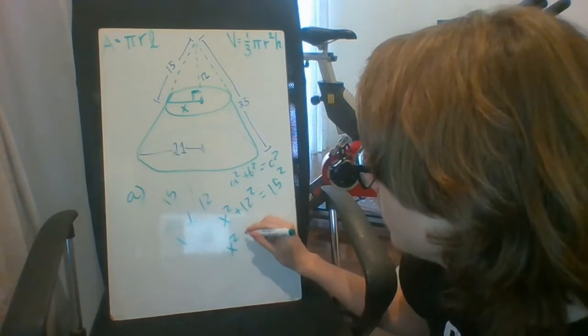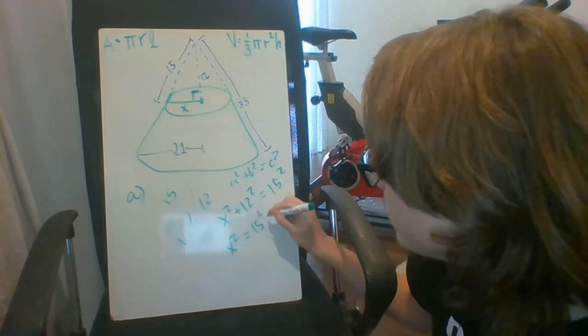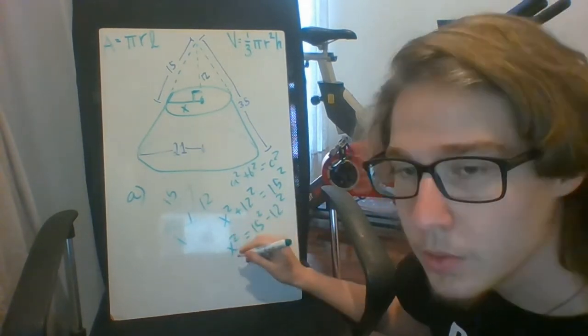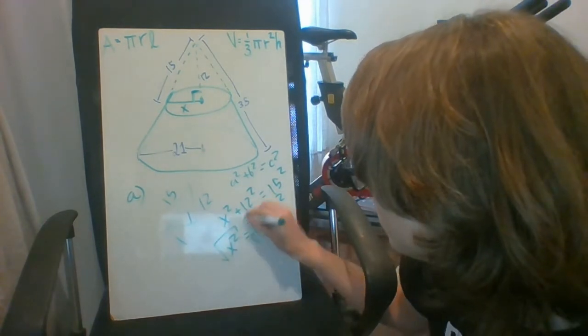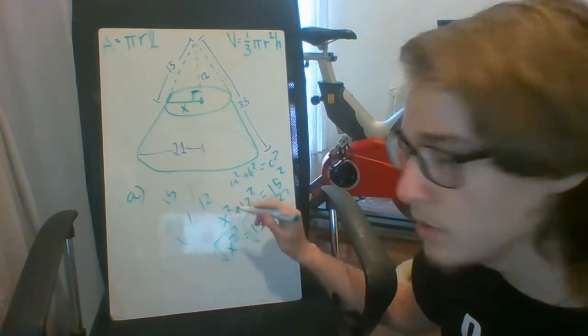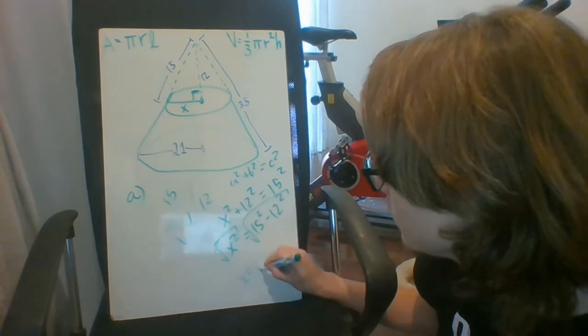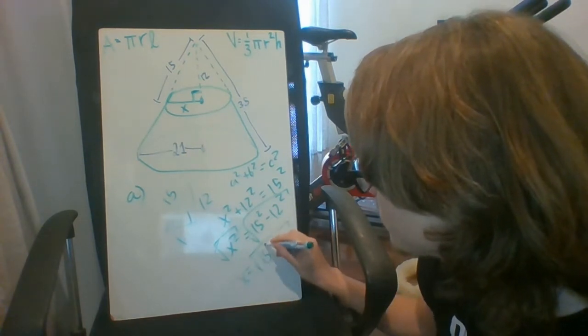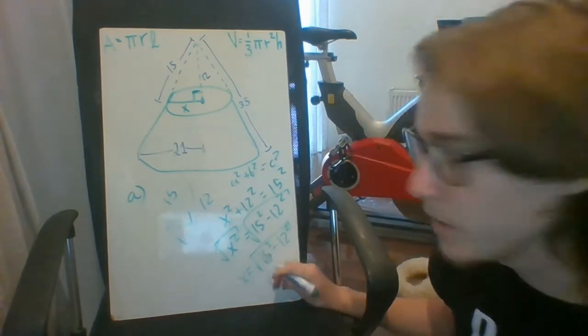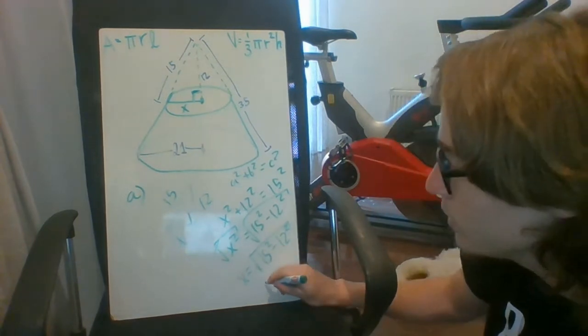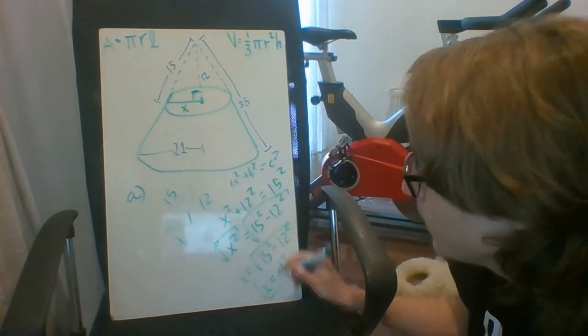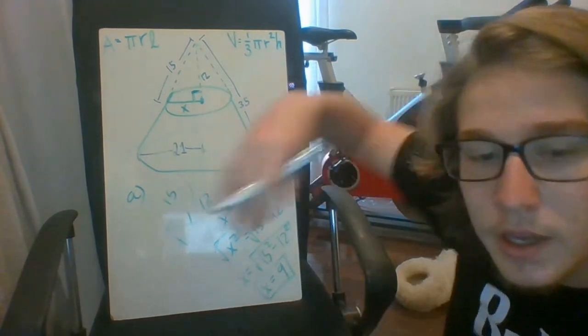Leaving x alone, 15 squared minus 12 squared. We do the square root on both sides, that gets rid of the exponent of 2. X equals the square root of 15 squared minus 12 squared. And if we put this in the calculator, we're gonna end up with x equals 9. So that is part A.